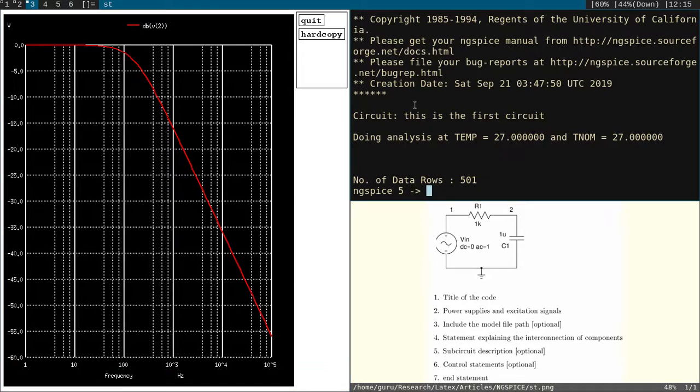You can see that first in the command prompt it will give these statements: title of the code. We have written this is the title, this is the first circuit. This is the title of the code and it will see at what temperature it is carrying the analysis and number of data rows. How many points? 100 points per decade we have mentioned. Totally 501 points it has considered and plotted accordingly.